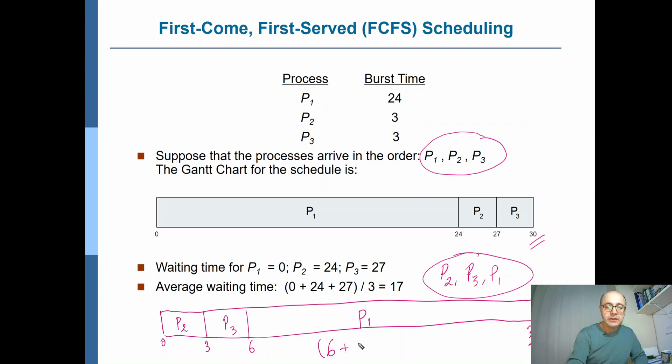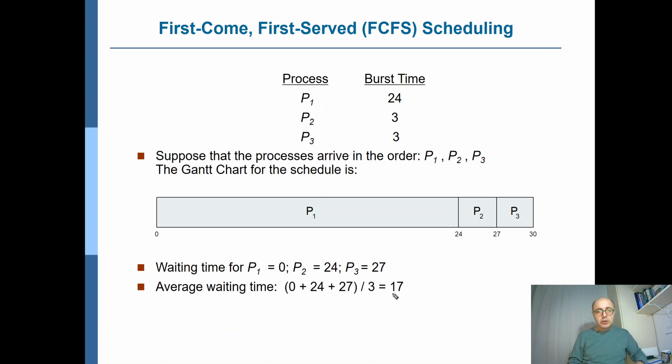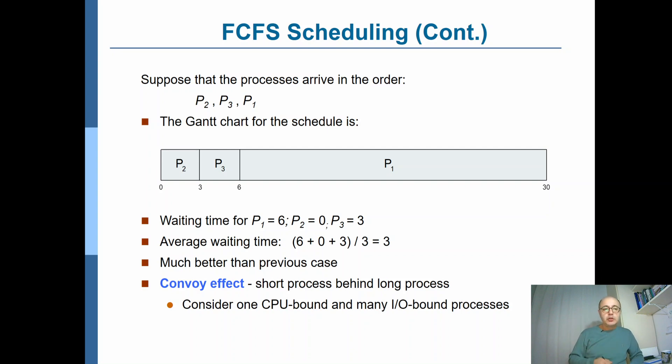And if you now look at the average waiting times: for P1, the average waiting time would be - it has waited to enter the queue for six milliseconds. And P2 has waited for zero milliseconds, and P3 has waited for only three milliseconds. And we're taking the average since there are three processes, we are dividing by three, and we see that the average waiting time this time would be three milliseconds compared to 17 milliseconds. So what did we see from here? First-Come, First-Served scheduling might give quite different responses heavily dependent on the order of the arrival of these processes.